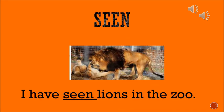Seen means to see, to look — something which you have already seen, which you have already looked at. The sentence is: I have seen lions in the zoo. Where have they seen the lions? In the zoo. So: I have seen lions in the zoo.